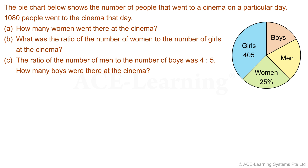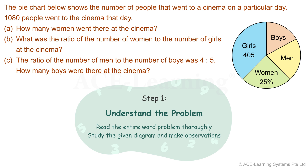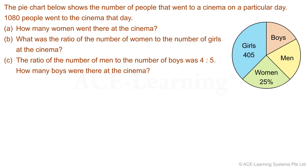Here is a word problem with a given pie chart. How should we approach it? Step 1: Understand the problem. Read the entire word problem thoroughly and study the given diagram, making observations. The given pie chart shows the number of people that went to a cinema on a particular day. 1,080 people went to the cinema that day.